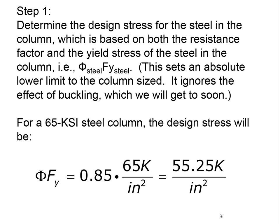We're going to determine the design stress for the steel in the column, which is based on both the resistance factor and the yield stress of the steel. In other words, it's phi — the resistance factor — times F yield for the steel. I'm going to introduce this piece of information in this particular example and you will use it for the assignment. For a steel column, phi steel is 0.85.